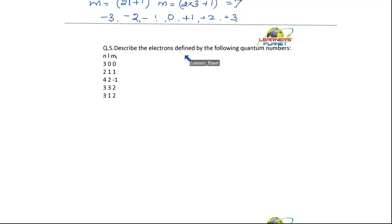Describe the electrons defined by the following quantum numbers. Say R, this is ABCDE. For A, what is N=3? So, the electron is present in which energy level? It is present in the third energy level.